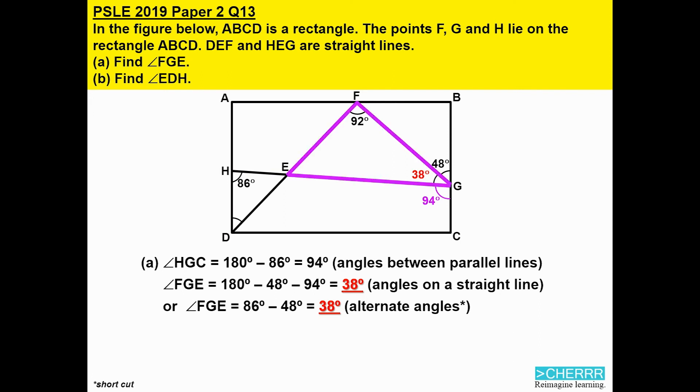In part B, we now look at angles in a triangle. So we are looking at triangle EFG now. And all we need to do is take 180 degrees and minus 92 degrees and minus 38 degrees. We will get 50 degrees for angle FEG.